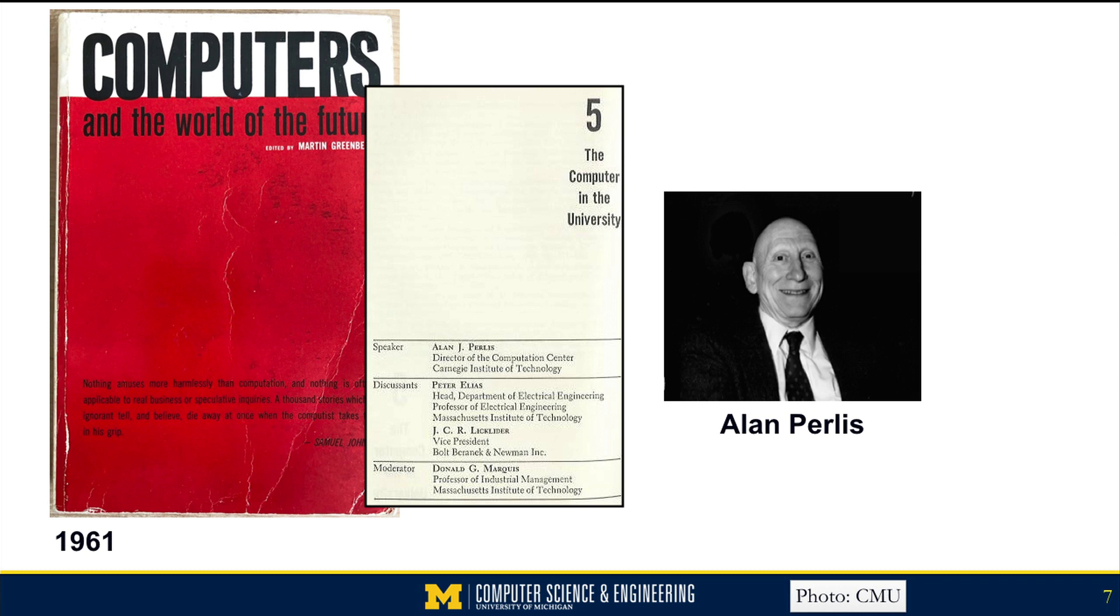Perlis, who was the first ACM Turing Award winner - the Turing Award is sort of computer science's version of the Nobel Prize - started the computer science departments at Yale and Carnegie Tech, later to become Carnegie Mellon University.